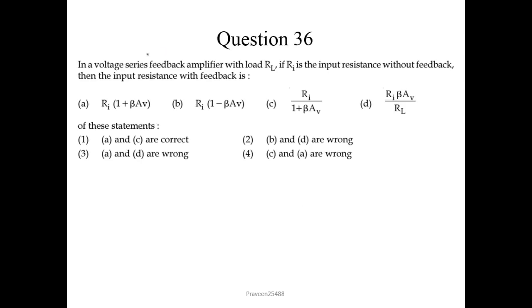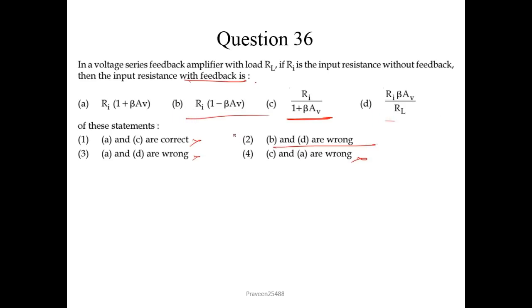Question number 36: in a voltage series feedback amplifier with load RL, if Ri is the input resistance without feedback, then from the direct expression the input resistance with feedback would be Ri·(1 + β·Av). Looking at the options, A and C are correct but cannot be the answer together; A and D are wrong; C and A are wrong; only B and D are wrong. So we choose option 2 as the correct answer.